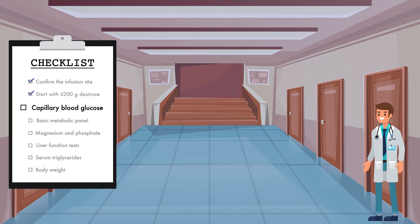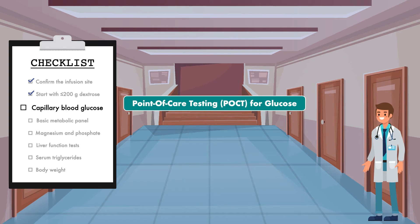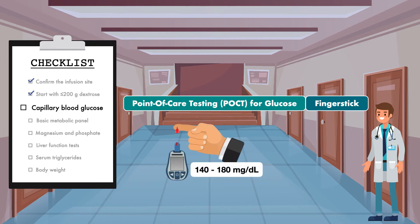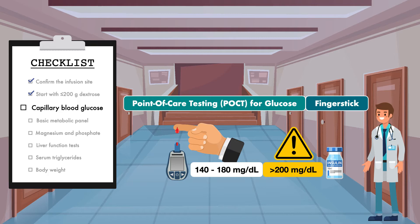This brings us to the third item on our list: obtain a capillary blood glucose concentration. This should be done using point-of-care testing for glucose, or POCT glucose, which is sometimes referred to as a finger stick measurement. The recommended POCT glucose for hospitalized patients receiving parenteral nutrition is 140 to 180 milligrams per deciliter. If the baseline concentration is above 200, then it should be corrected with insulin prior to the start of the infusion. Once parenteral nutrition is being administered, the dextrose load should only be increased toward the goal when the patient's blood glucose concentrations are within the desired range.